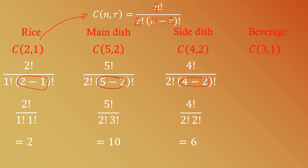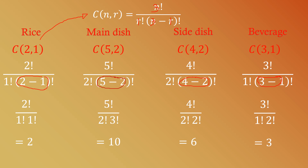For the beverage, C(3,1): n equals 3, r equals 1. So we have 3! over 1! times (3−1)! = 3! over 1! times 2!. Simplifying this gives us 3.